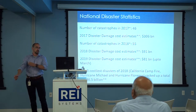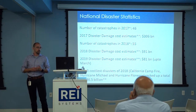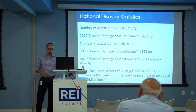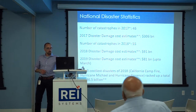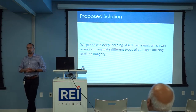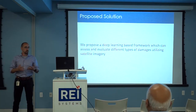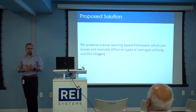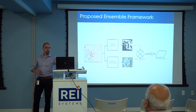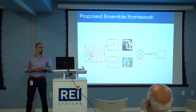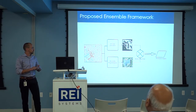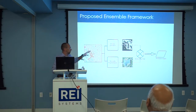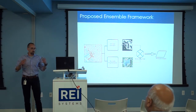Unfortunately disaster statistics are not going down from year to year. The damage is in the billions and keeps growing, especially with climate change. The solution we propose to help FEMA address this analytical bottleneck is to develop a deep learning-based framework which can assess the value of different types of damages using satellite imagery. We would take the satellite image and analyze it in parallel using change detection techniques and semantic segmentation, then use model ensembling to give a weighted prediction on which buildings have been damaged.